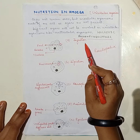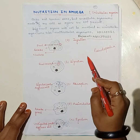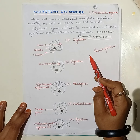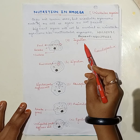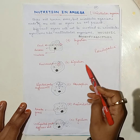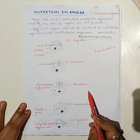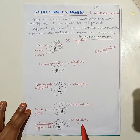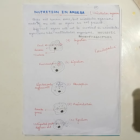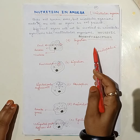The steps of nutrition in the case of unicellular organisms will remain the same as for multicellular organisms. The first step is ingestion, second is digestion, third is absorption, fourth is assimilation, and the last step is egestion.